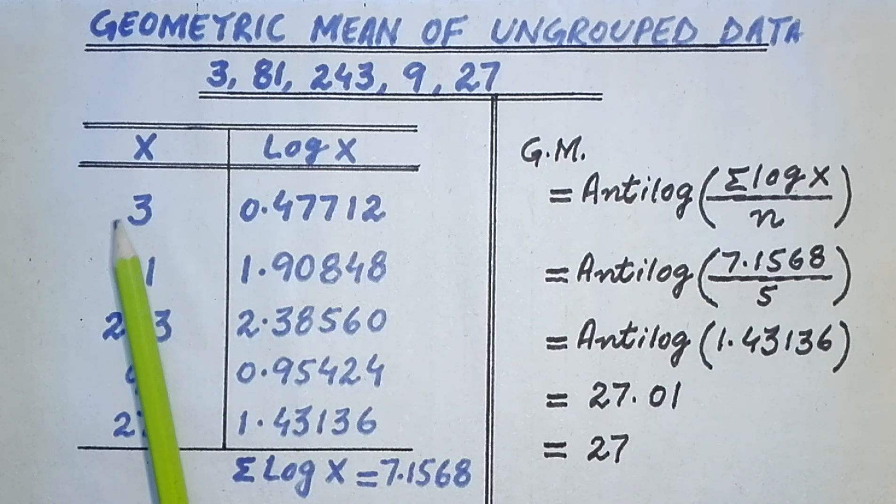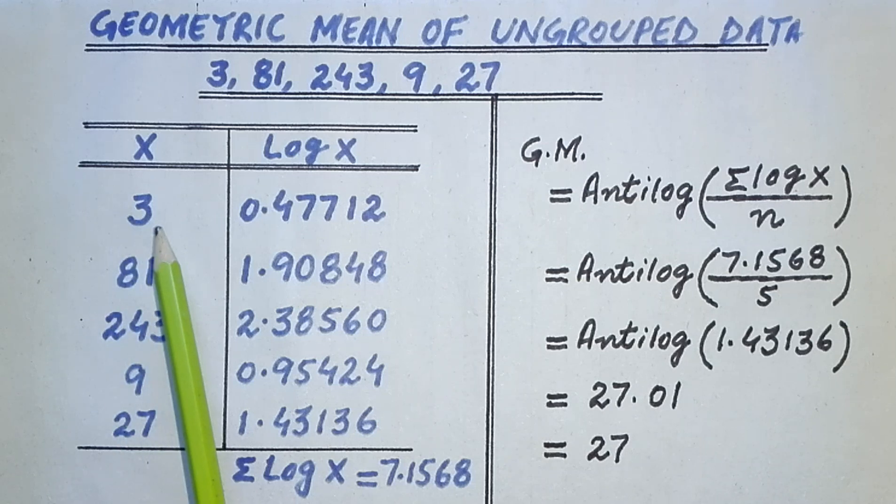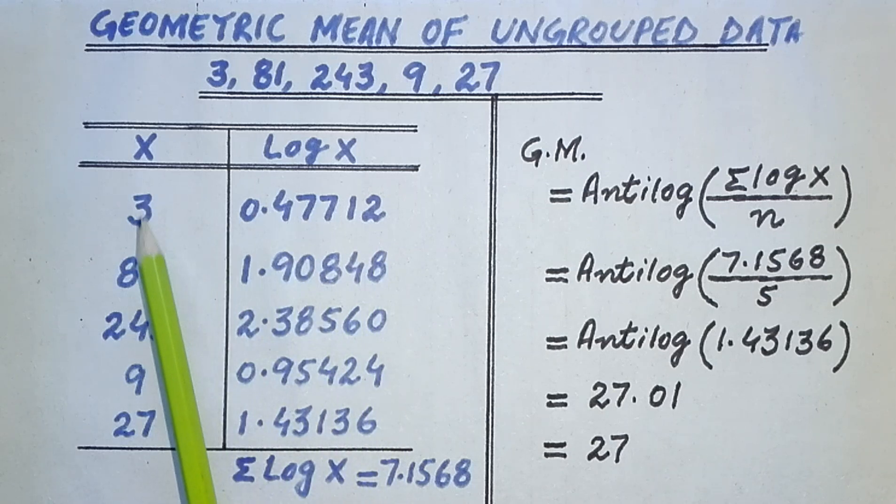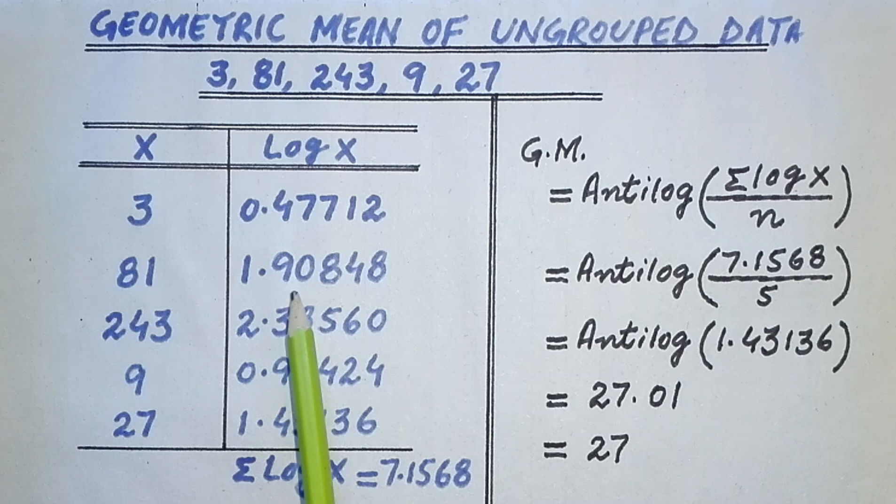For example, the first value of x is 3, and when we find its log with the calculator, we get 0.47712. The next value of x is 81, and when we find its log we get 1.90848, and so on.